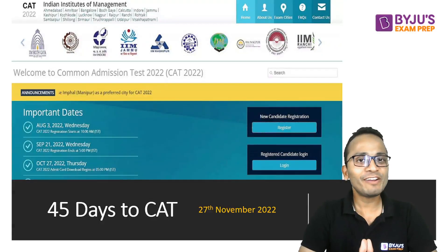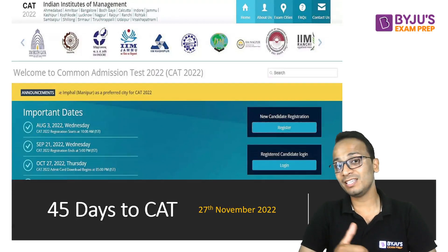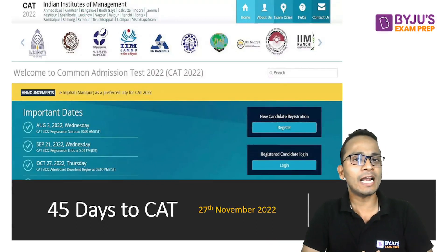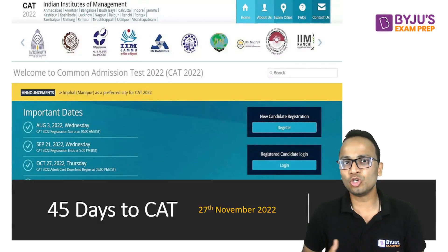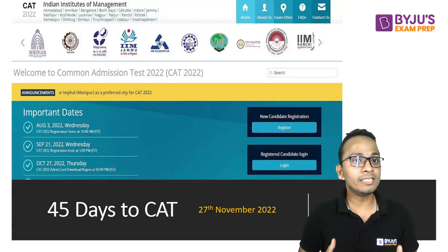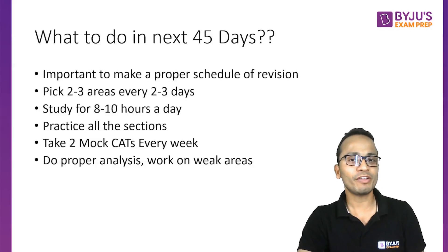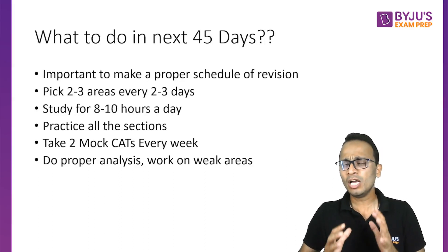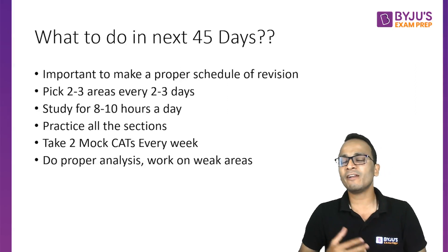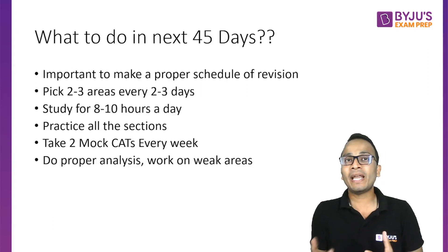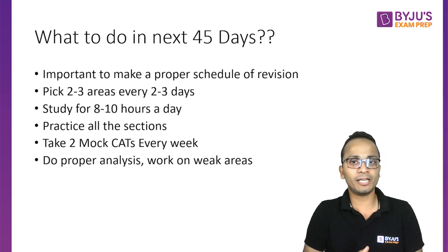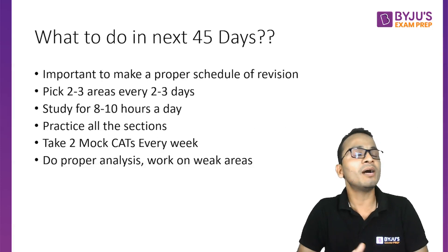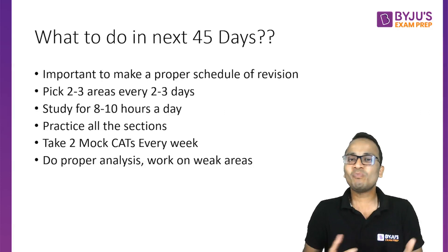Hello friends, with only 45 days left to CAT, we need to plan these remaining 45 days properly so that we can increase our score to a certain extent. Let us spend a few minutes understanding how to plan what we need to do in these 45 days. It is very important to make a proper schedule for revision so that we are not confused at the beginning of every day thinking about what to do. We should pre-plan all these things to save time and ensure our revision goes in the right direction.